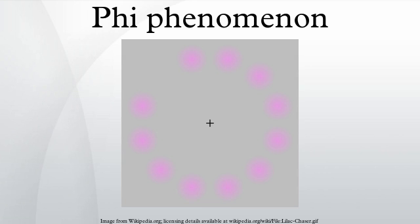The classic Phi Phenomenon experiment involves a viewer or audience watching a screen upon which the experimenter projects two images in succession. The first image depicts a line on the left side of the frame. The second image depicts a line on the right side of the frame. The time lag between offset of the first and onset of the second line is varied.